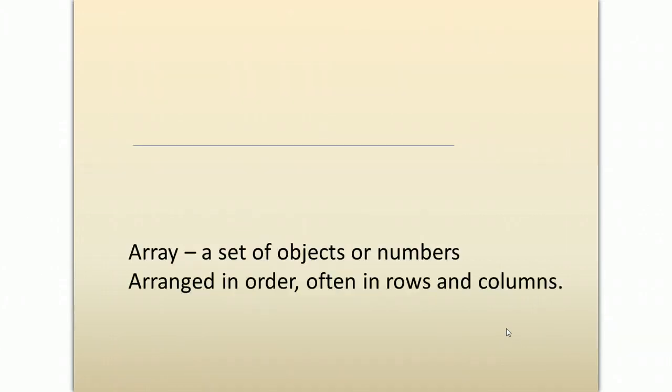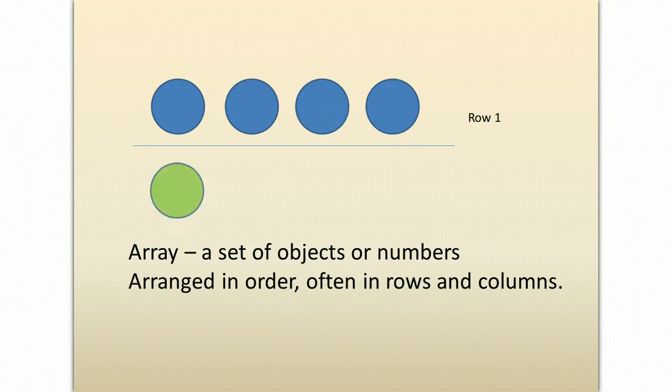An array is a set of objects or numbers arranged in order, often in rows and columns. Arrays help us visualize a multiplication problem. Here we have 2 rows with 4 circles in each.